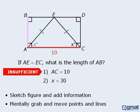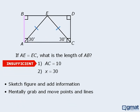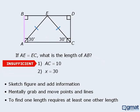Before examining statement 2, we must remove the information from statement 1. Statement 2 tells us that x is 30, so we'll add this to our diagram. Does this information force side AB into having just one length? We want to find the length of side AB, and at the moment we are given no lengths in this diagram. So applying the rule from earlier, we know that statement 2 is not sufficient.